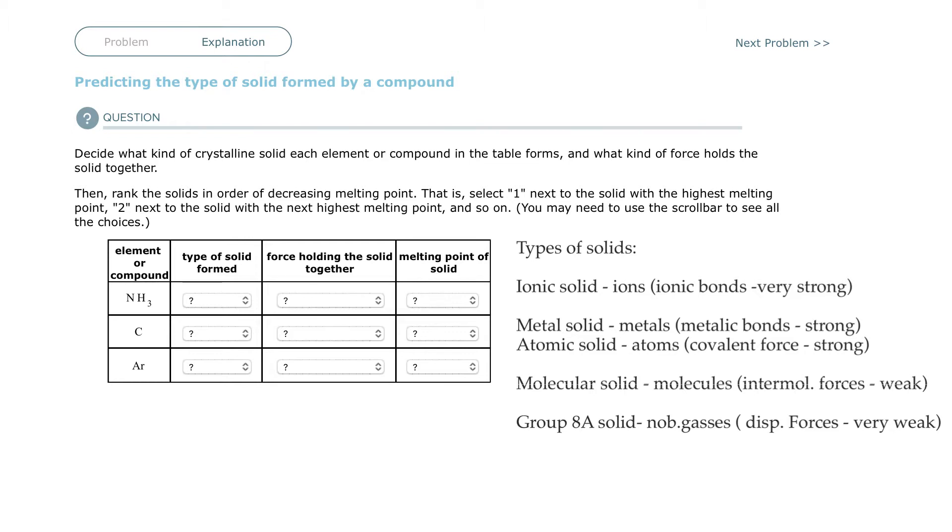So your strongest is going to be ions, looking for ions, something left and right, and you're going to have ionic bonds, and that's very strong. Your weakest will be anything noble gases. Those will only be dispersion forces, and that'll be your weakest.